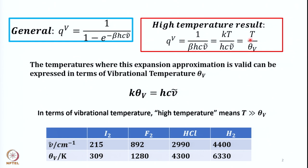We discussed the significance of this characteristic vibrational temperature. This expression can be used when the temperature is much higher than the vibrational temperature, which we calculate using the equality k·θv = hcν̄, where ν̄ is the vibrational wave number for a particular mode of vibration. So high temperature means the temperature of interest must be much larger than the characteristic vibrational temperature.